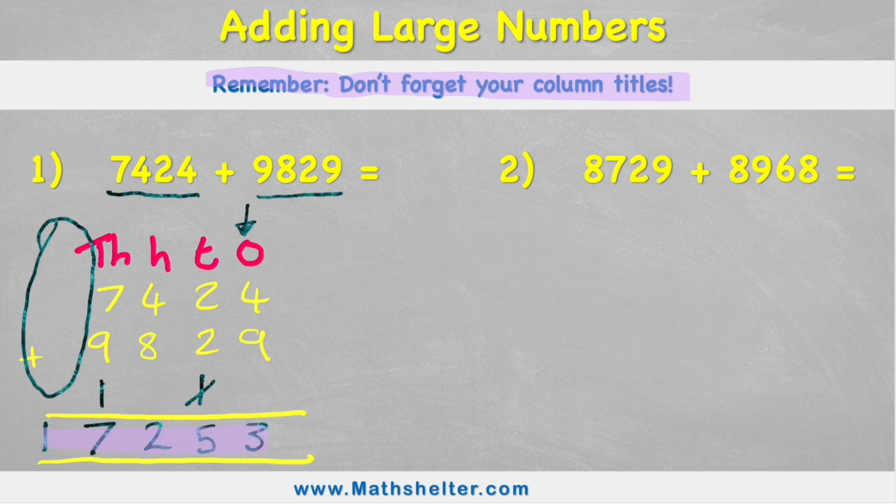Okay, let's look at this second example. And let's be a bit quicker with my setup. So I'm going to have 1s, 10s, 100s, and 1,000s just like before. And this time I have 8,729 added to 8,968. Again, I'm going to leave this row. So I'm going to put my answer row a little bit lower so that I've got this gap just here to put any numbers that need to be carried over into.